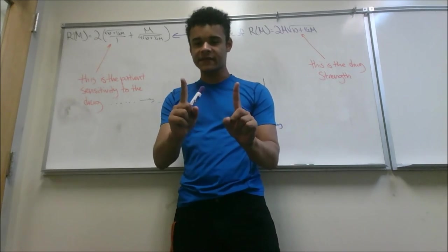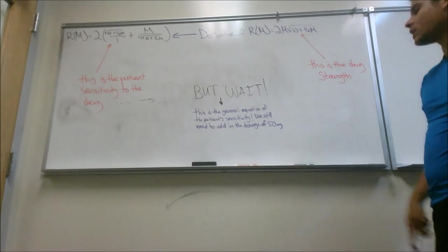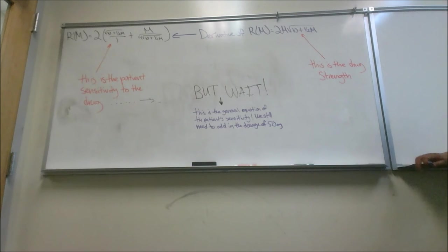But wait. This is only the general equation of the patient sensitivity. We still have to add in the added factor of the dosage being 50 milligrams. So what this means is, we need to look at the derivative of the equation, and for every place there's an M, we need to replace that with 50 and then do the proper calculations.